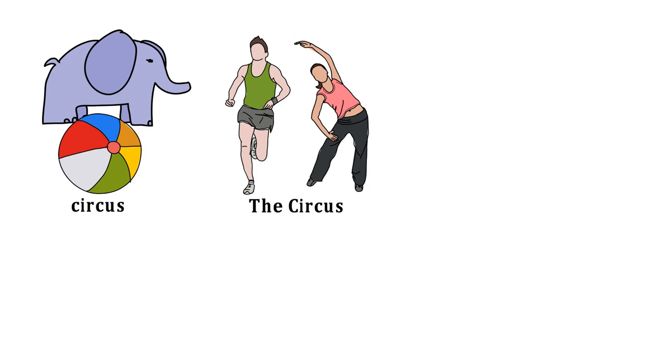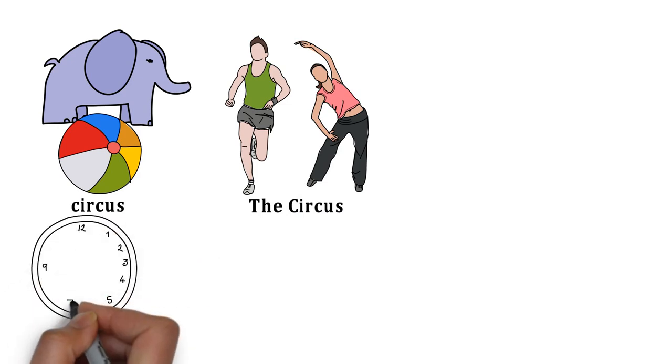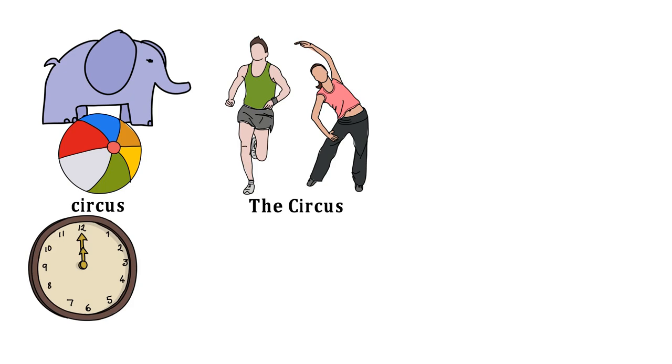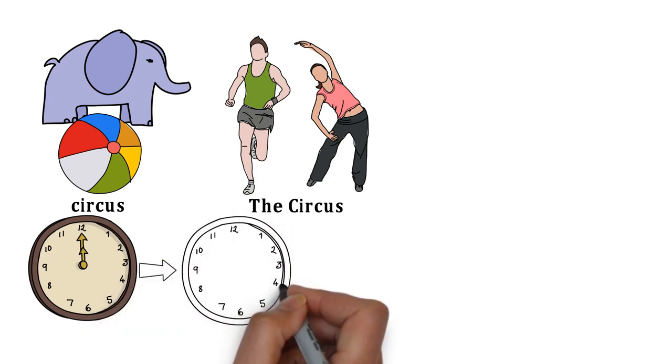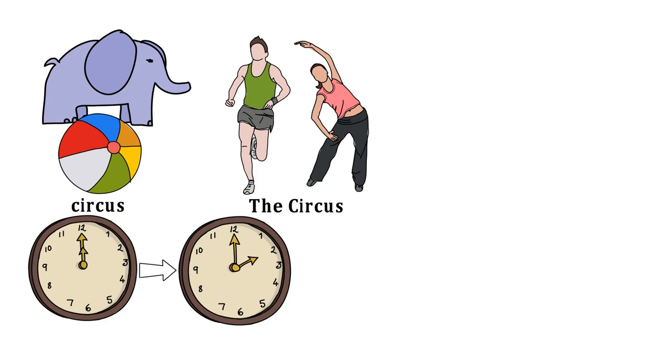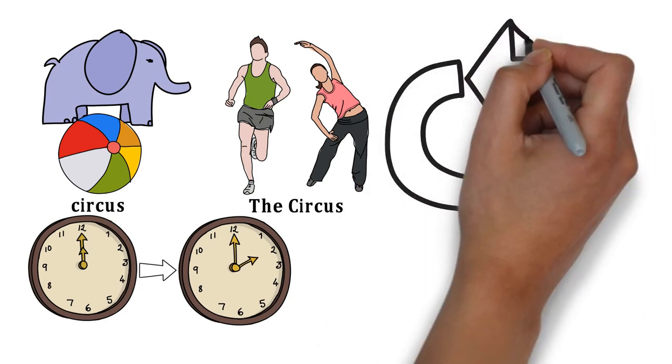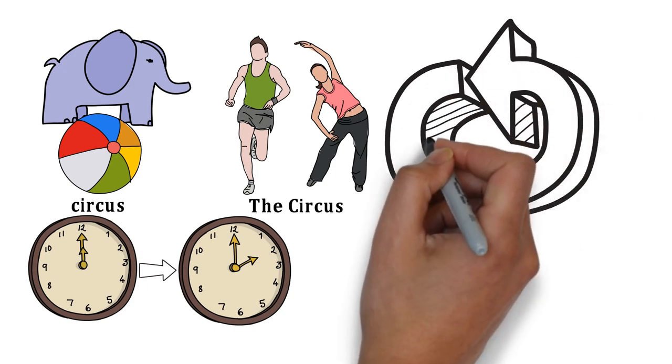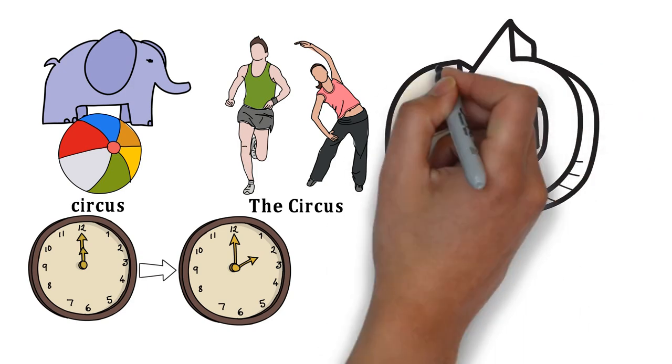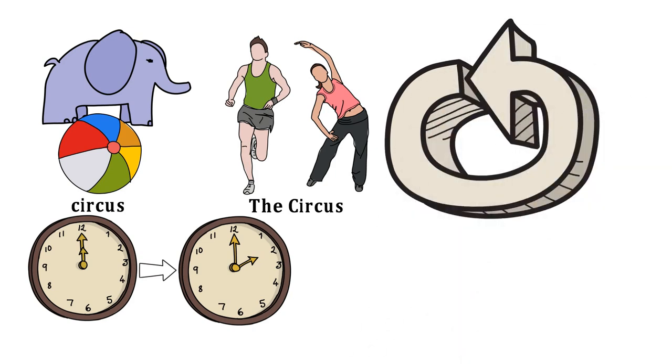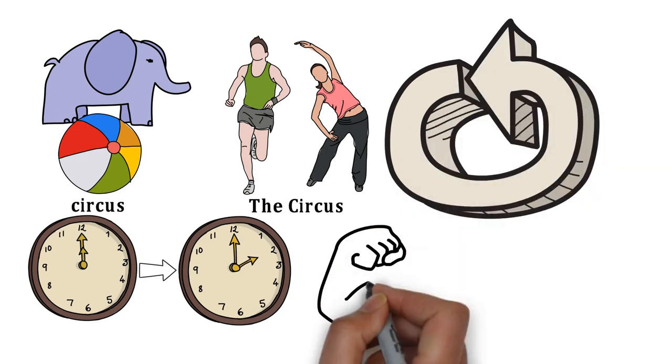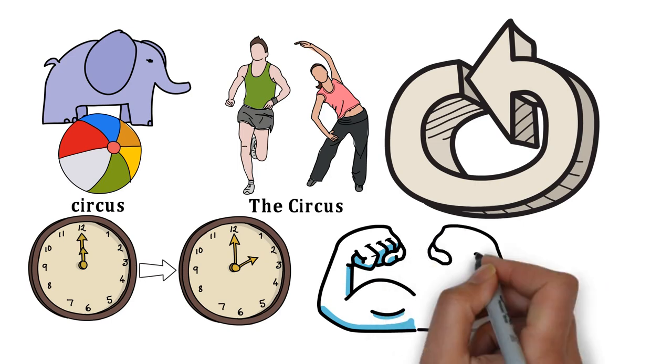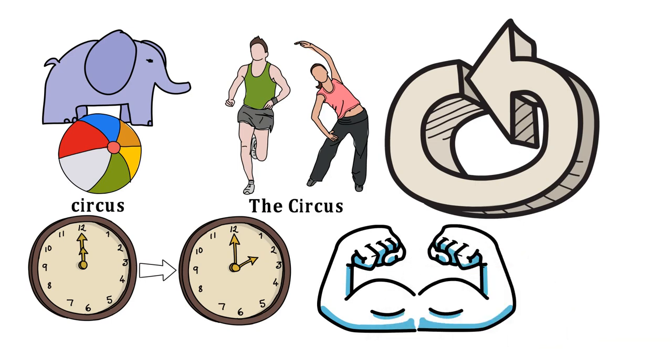Whenever Billy or his swim buddy failed an event, they would both be subjected to the circus, which was additional training every afternoon at the end of the day. Two hours of calisthenics and harassment, and every time Billy entered the circus, he'd be even more tired the next day, causing him to fail another event, and back to the circus he went. However, as the circuses continued, their swims got better and easier. They were now stronger, faster, and more confident.